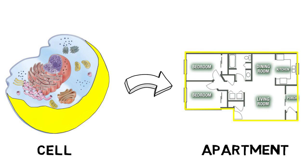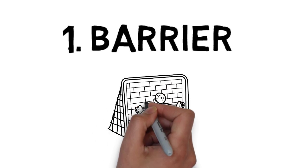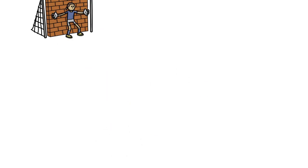Similar to the apartment wall, one of the key functions of the cell membrane includes the formation of a barrier which forms the perimeter of the cell, keeping things out from the cell.